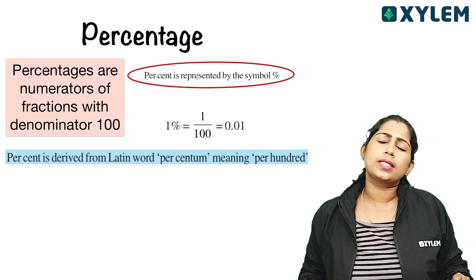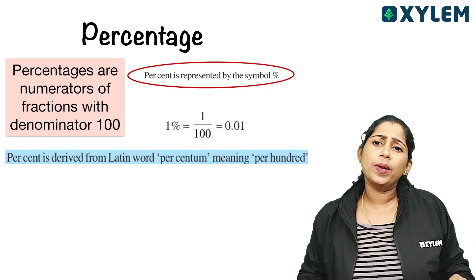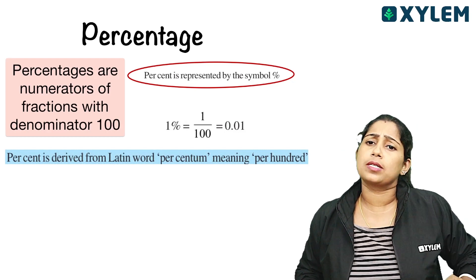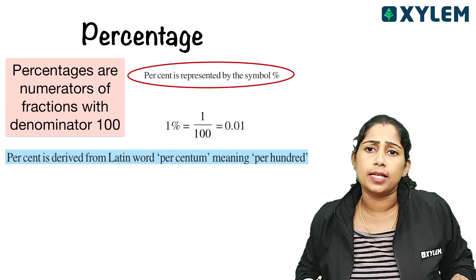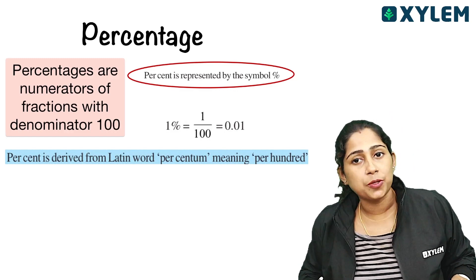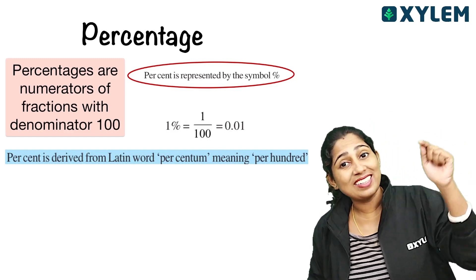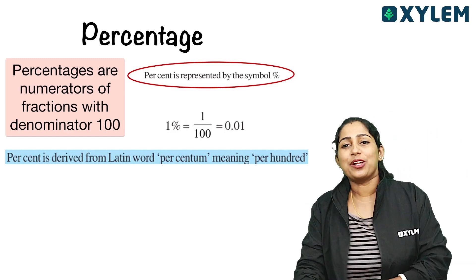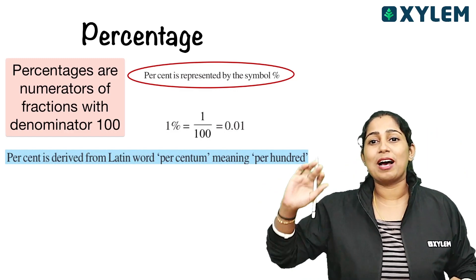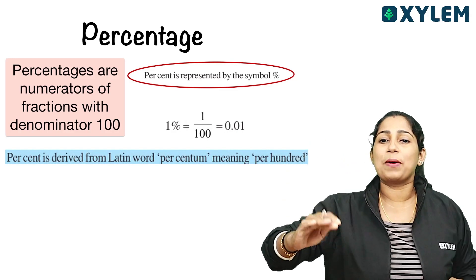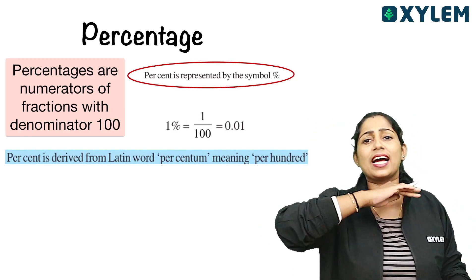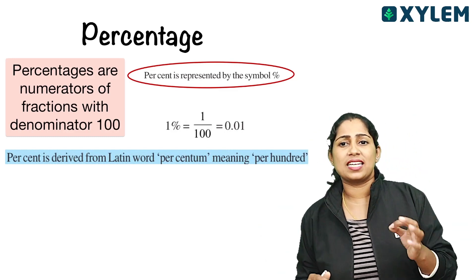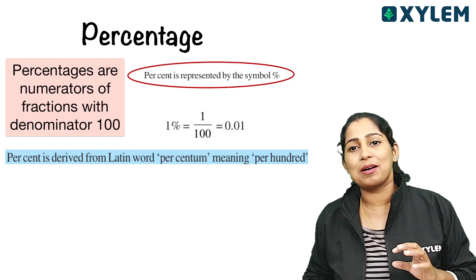So you can say that the denominator is 100. We will discuss that in this chapter. There is sometimes confusion about percentage — percentage means percentage.